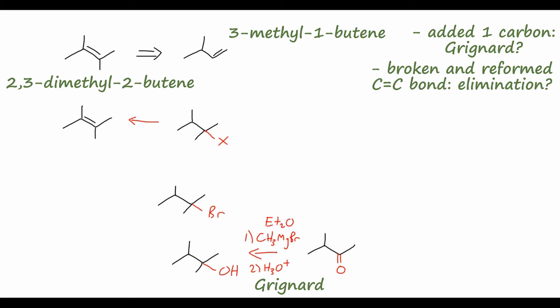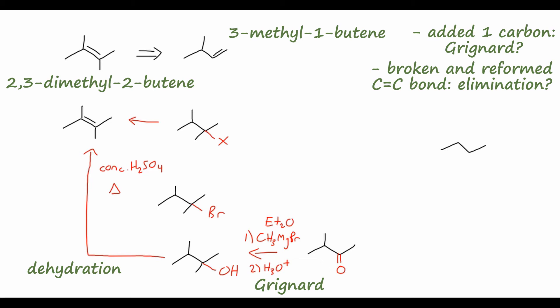Now that we know how to get to our tertiary alcohol intermediate, we can fill in the reagents for the elimination reaction. We treat this alcohol with concentrated hot sulfuric acid, which dehydrates the alcohol to form the alkene. This will give us the more substituted, more thermodynamically stable alkene — which is our final product. So now we've arrived at the ketone intermediate, which is starting to look a lot more like our starting material. Let's approach the ketone from the starting material side as well.